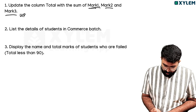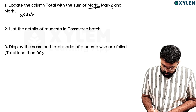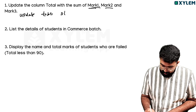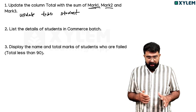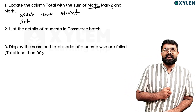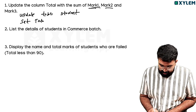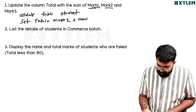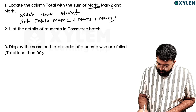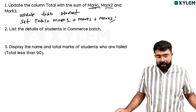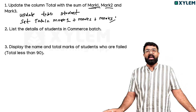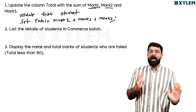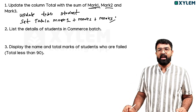UPDATE student SET total = mark1 + mark2 + mark3. So the UPDATE statement sets the total column equal to mark1 plus mark2 plus mark3 for the student table.